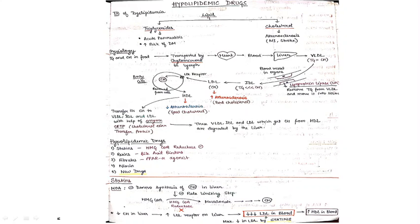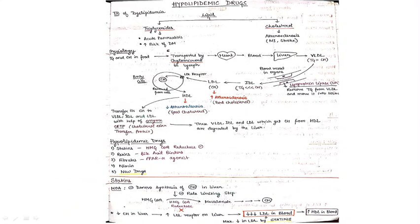This is the next part of blood pharmacology where we discuss hypolipidemic drugs — drugs used for lowering lipid in the blood. Lipid is of two types: triglyceride and cholesterol. Cholesterol promotes atherosclerosis, leading to MI and stroke, while triglyceride is responsible for acute pancreatitis and increases the risk of diabetes mellitus.